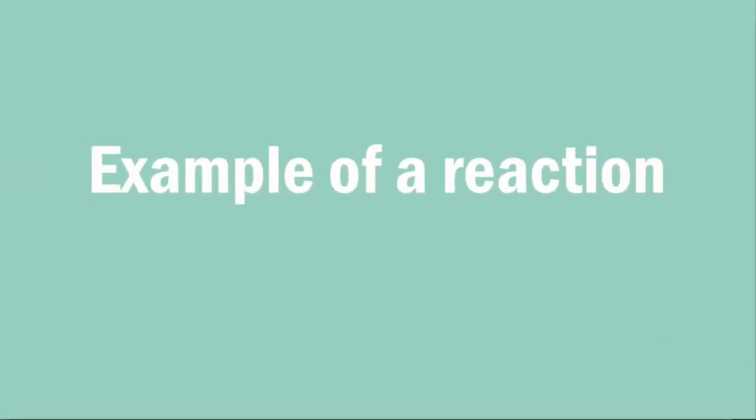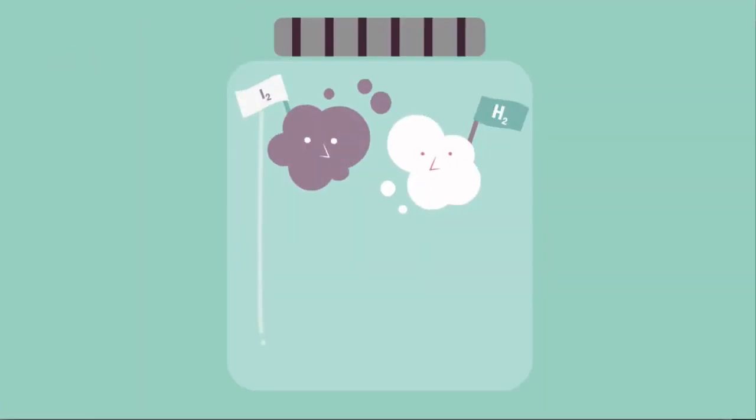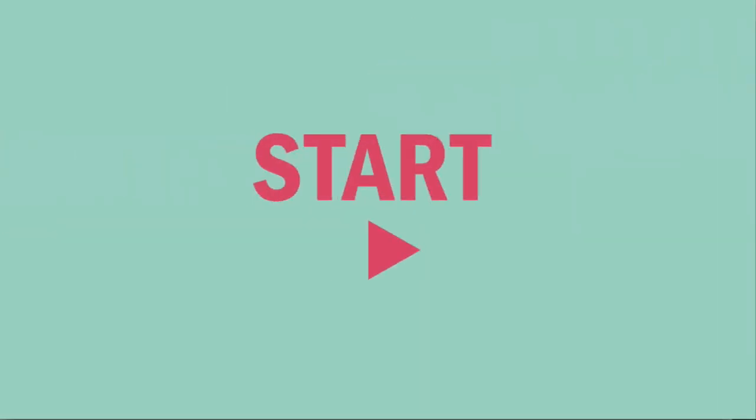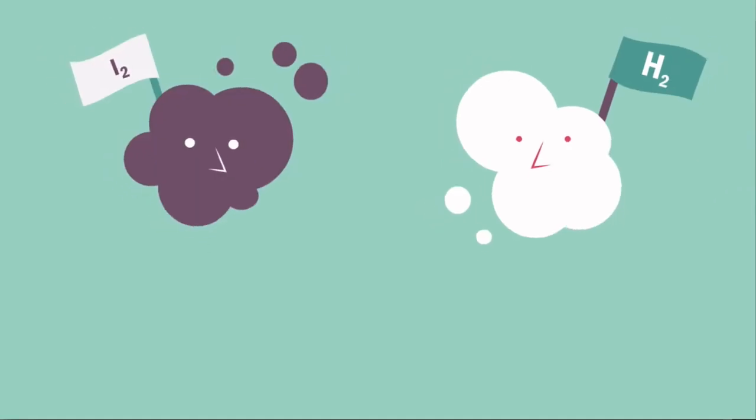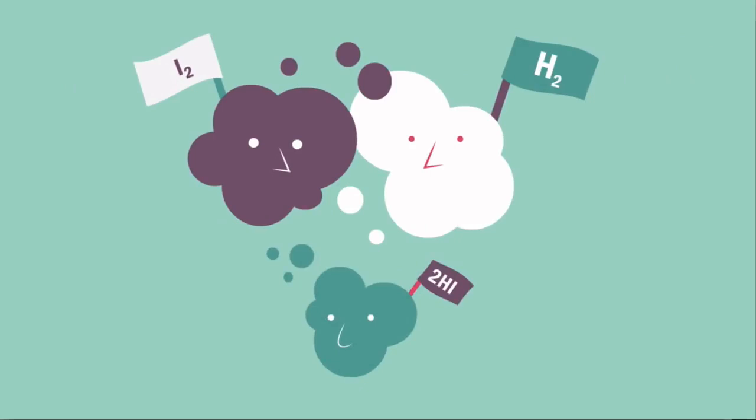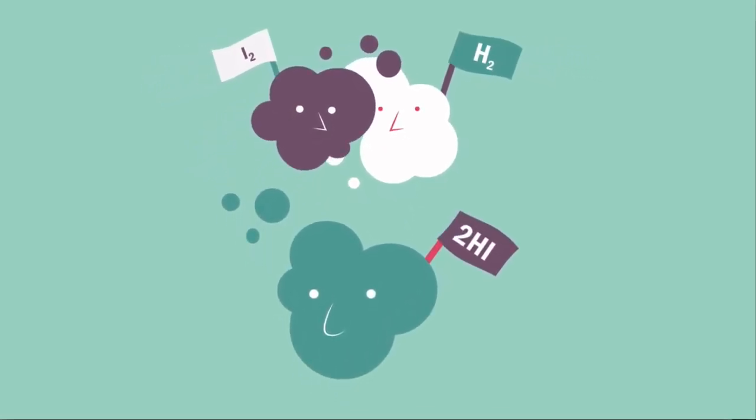An example of a reaction at equilibrium is the reaction of hydrogen and iodine in a closed container to produce hydrogen iodide. At the start of the reaction, there is a high concentration of hydrogen and iodine, and the concentrations decrease as hydrogen iodide is formed. The concentration of hydrogen iodide increases as the forward reaction proceeds.